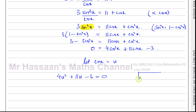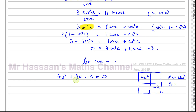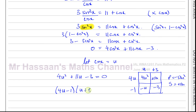I'm going to try to factorize this. I have four u squared and minus three, so these two terms must multiply to give negative 12u squared. Their sum must equal plus 11u, so I need two numbers with a product of 12 and a sum of 11 — that's 12 and 1. So I split it as plus 12u and minus u. Taking out common factors gives (4u minus 1)(u plus 3) equals zero.